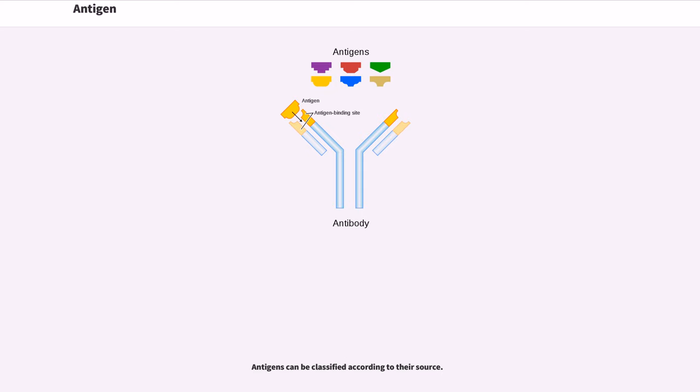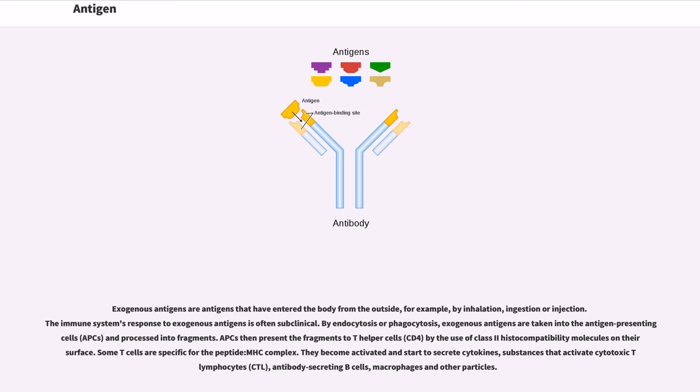Antigens can be classified according to their source. Exogenous antigens are antigens that have entered the body from the outside, for example, by inhalation, ingestion or injection. The immune system's response to exogenous antigens is often subclinical.